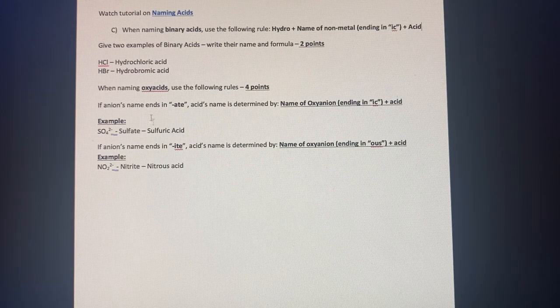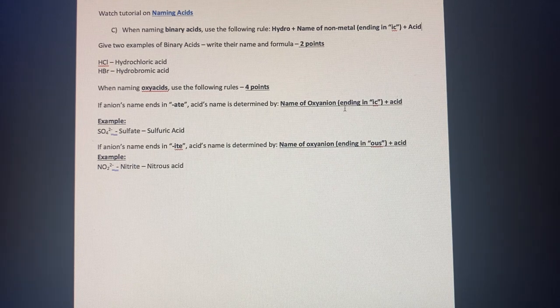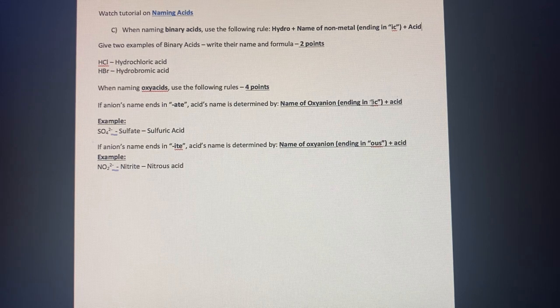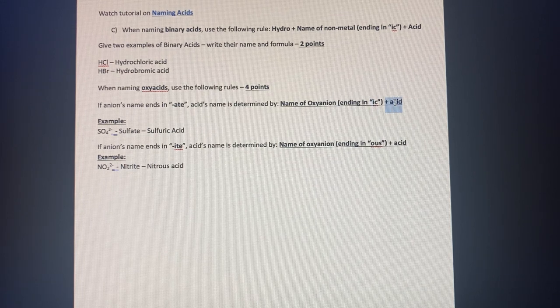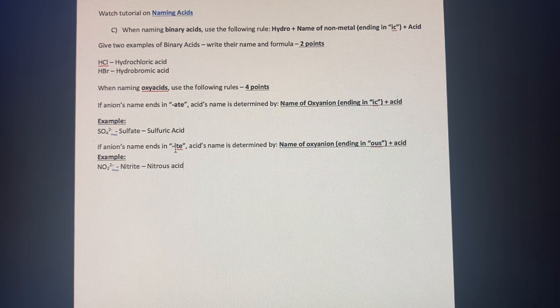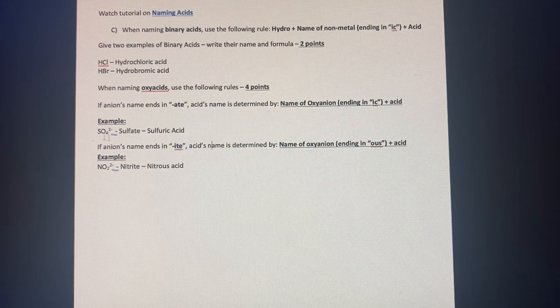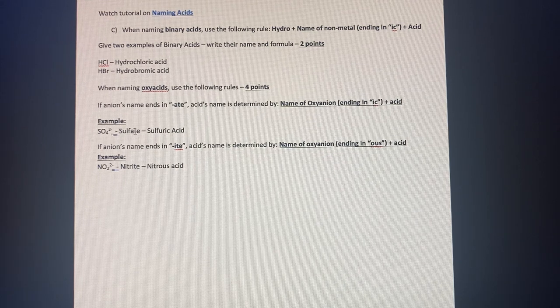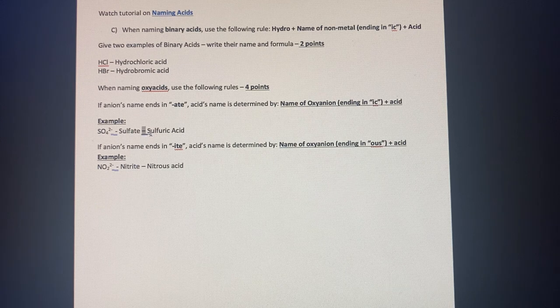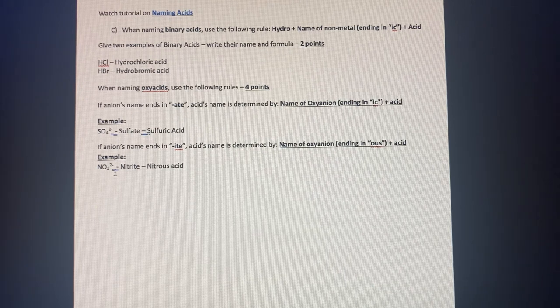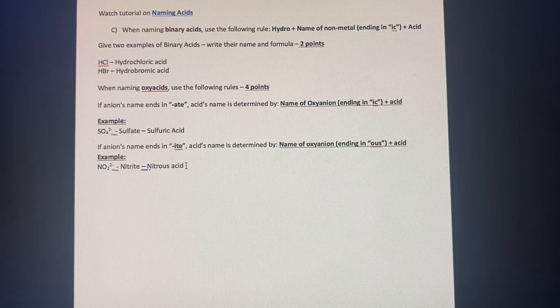And then for the last one, when naming oxyacids, we have two different examples of name of the oxyanion, and then change it to ending in IC plus acid, and then changing to OUS if it ends in ITE. So for sulfur oxygen, so sulfate, it then turns into sulfuric acid. For nitrogen and oxygen, or nitrate, we then have nitrous acid.